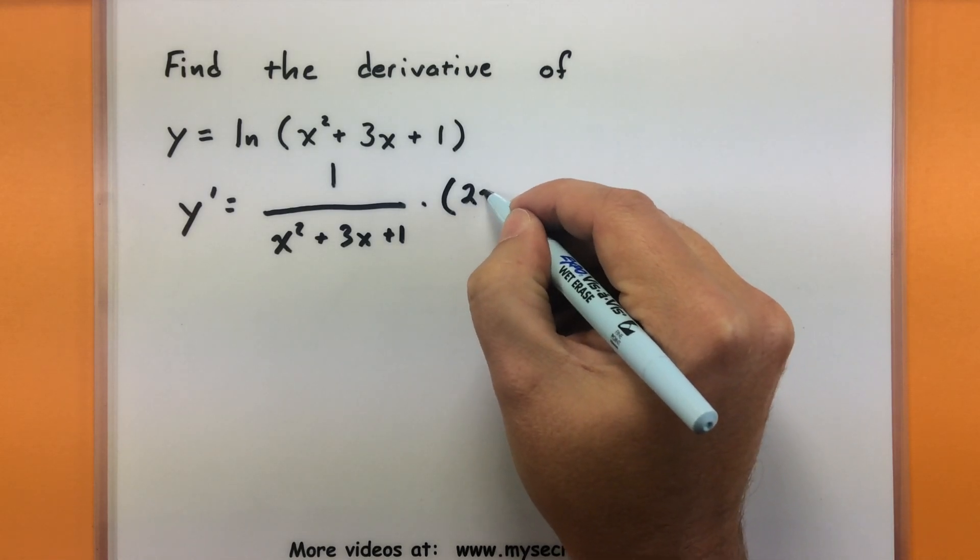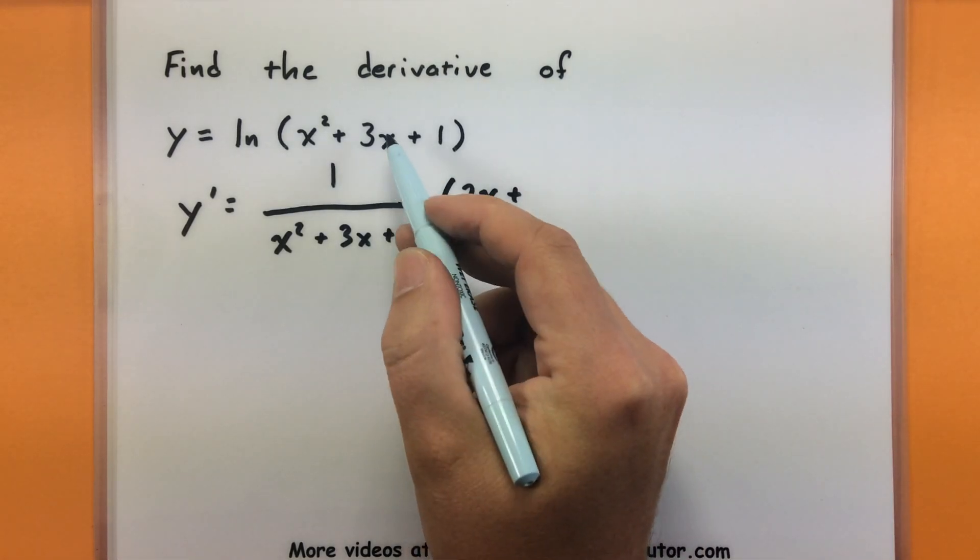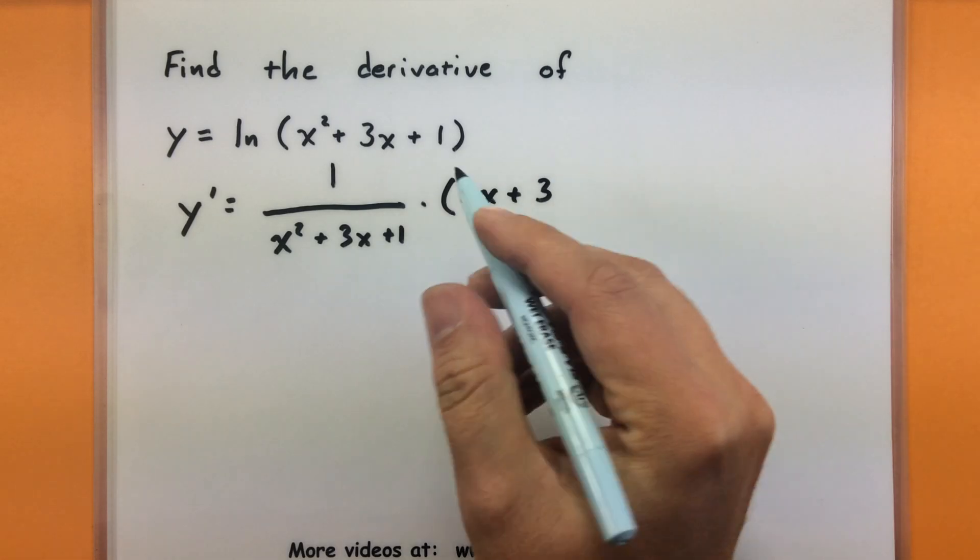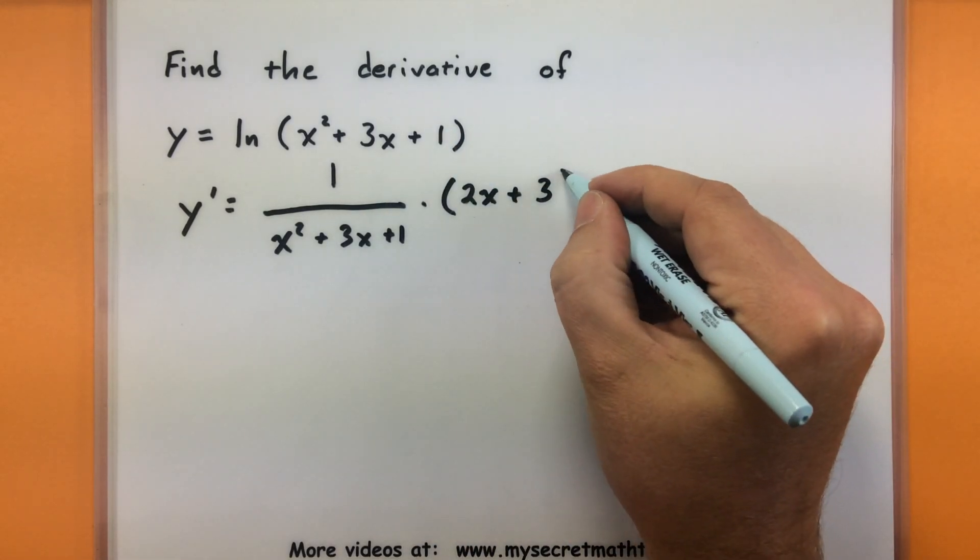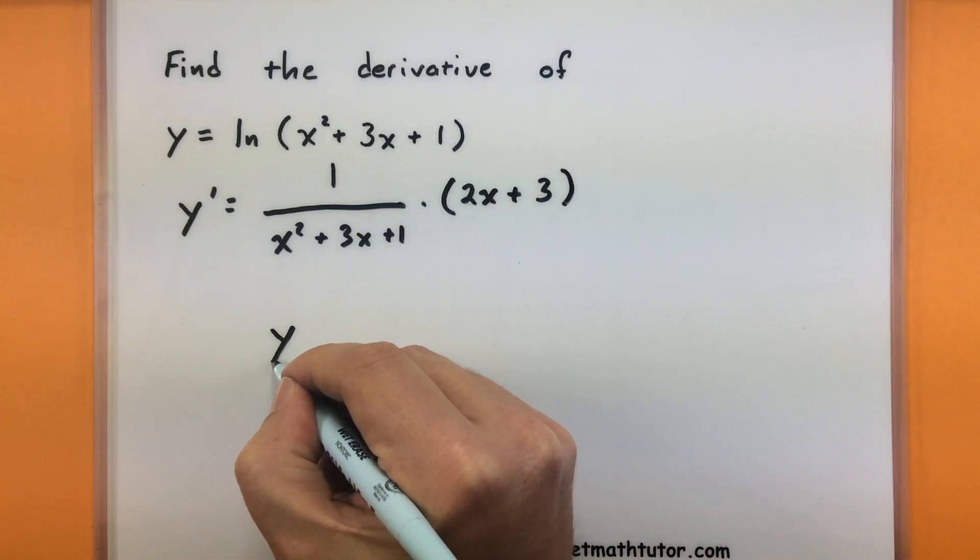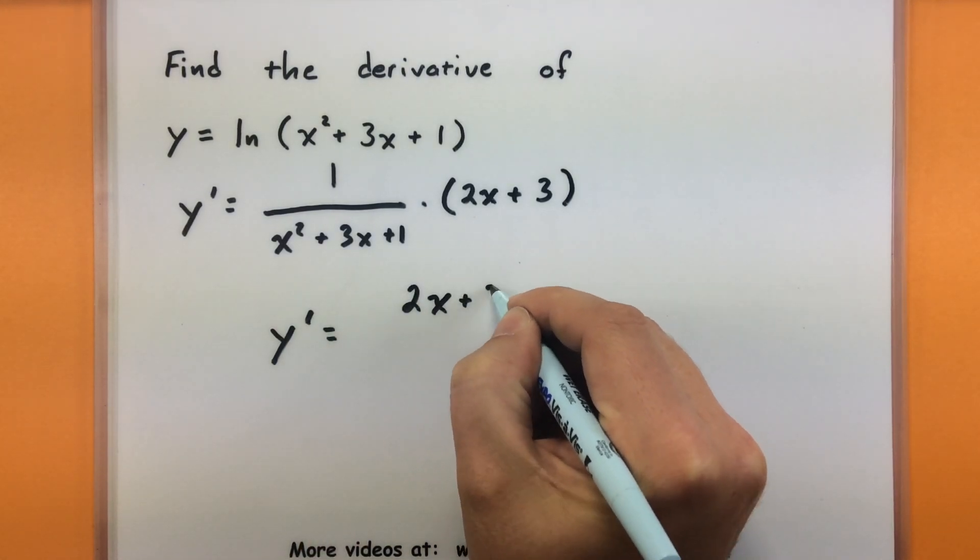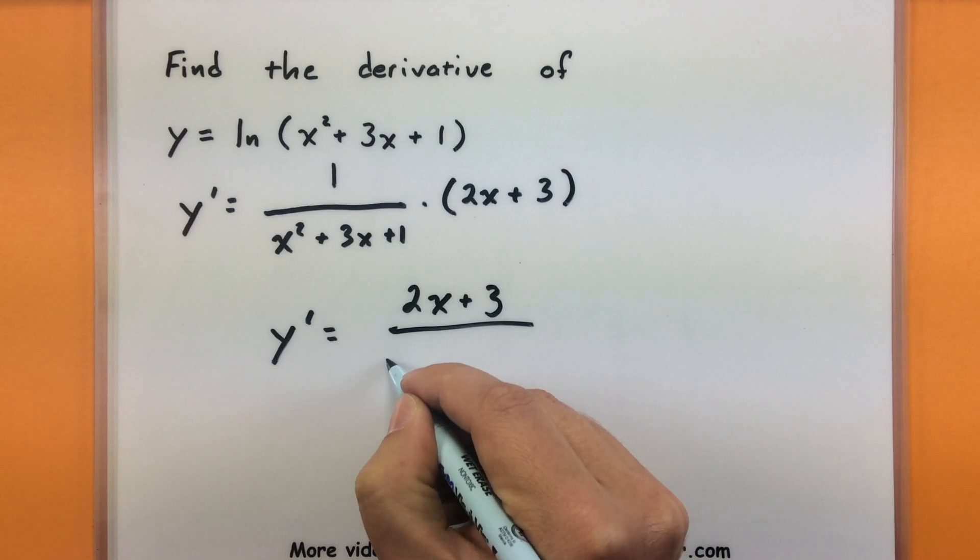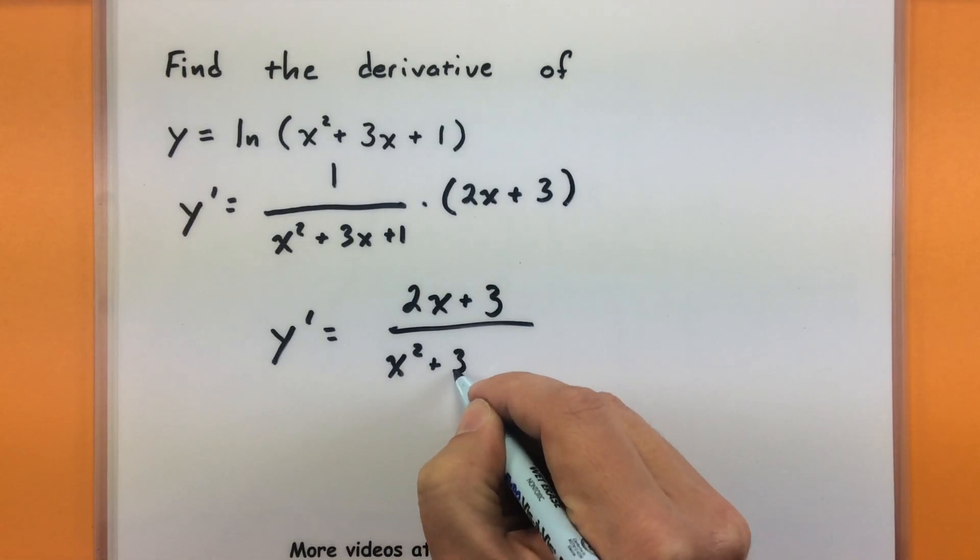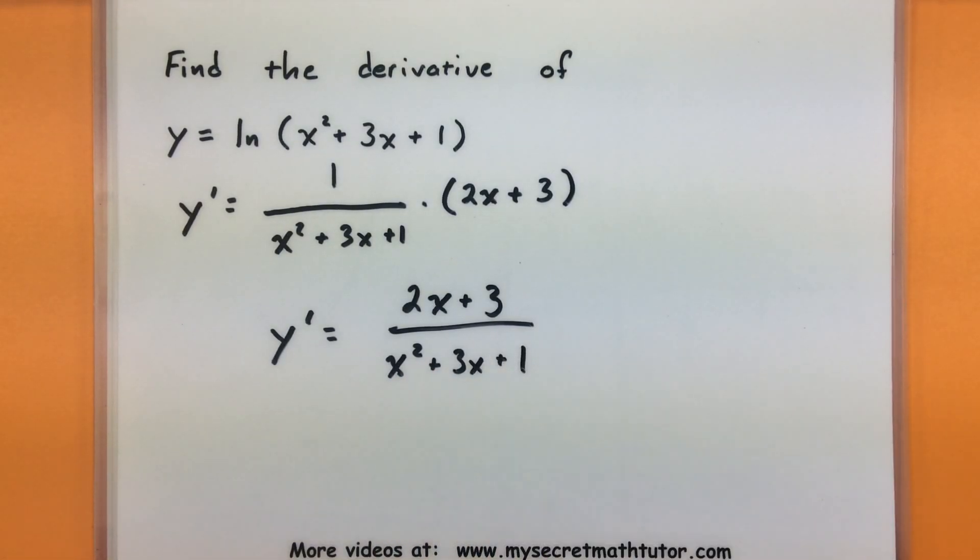So derivative of x squared is 2x, derivative of 3x is just 3, and the derivative of a constant goes to 0, so that's all gone. This leaves us with a derivative of 2x plus 3 all divided by x squared plus 3x plus 1. Nice.